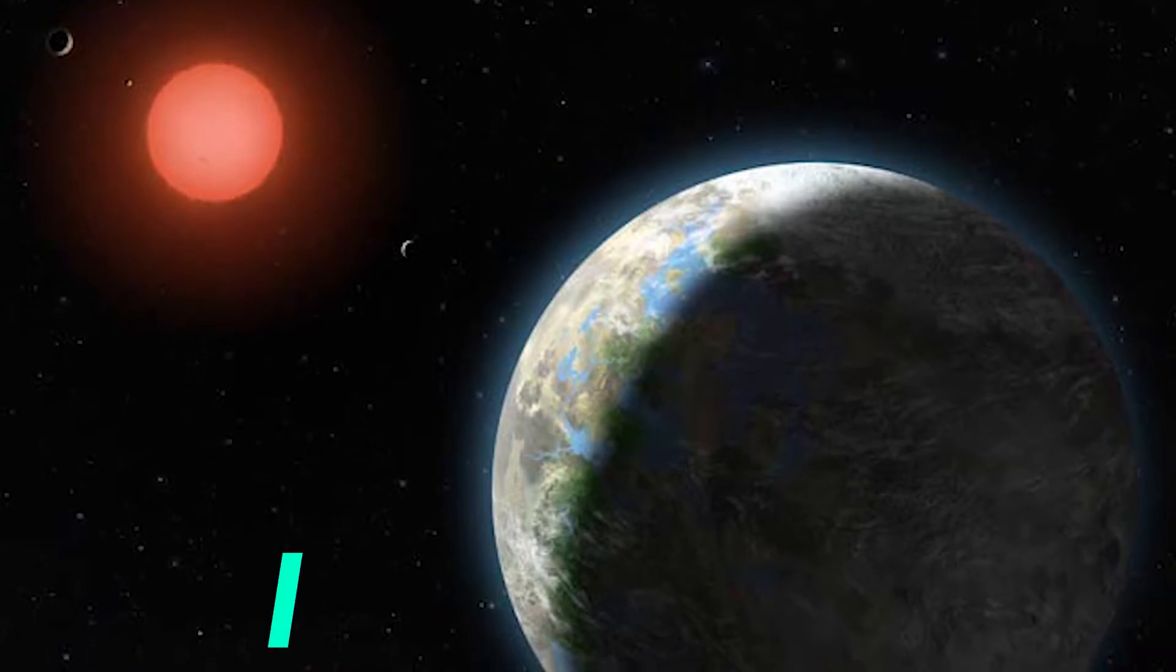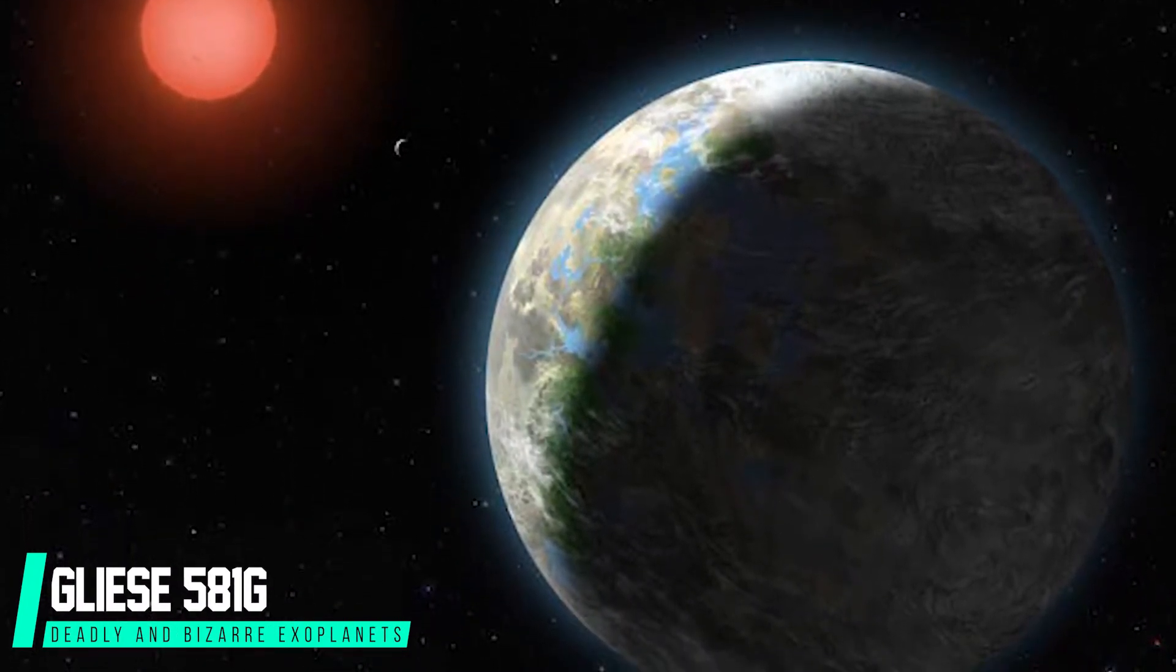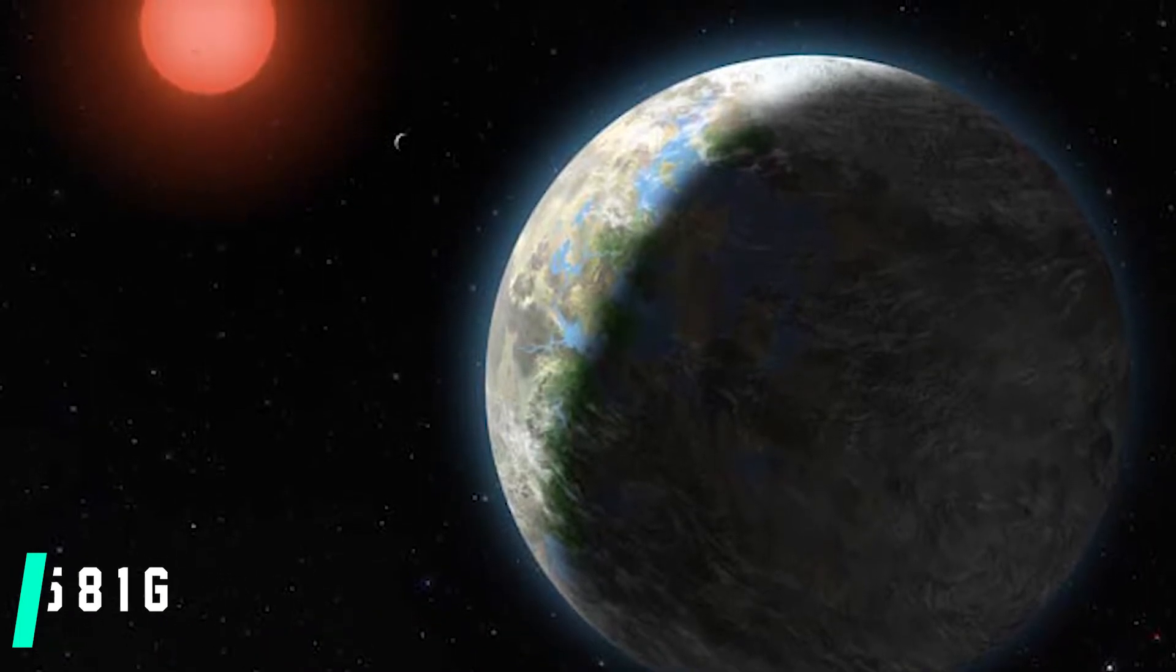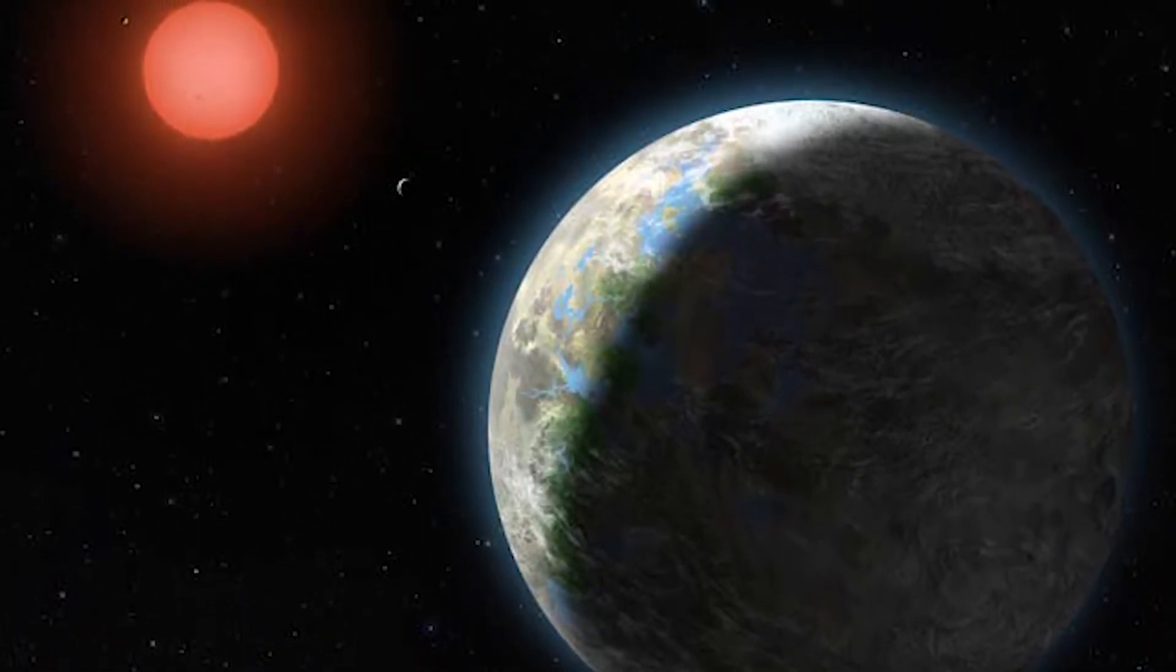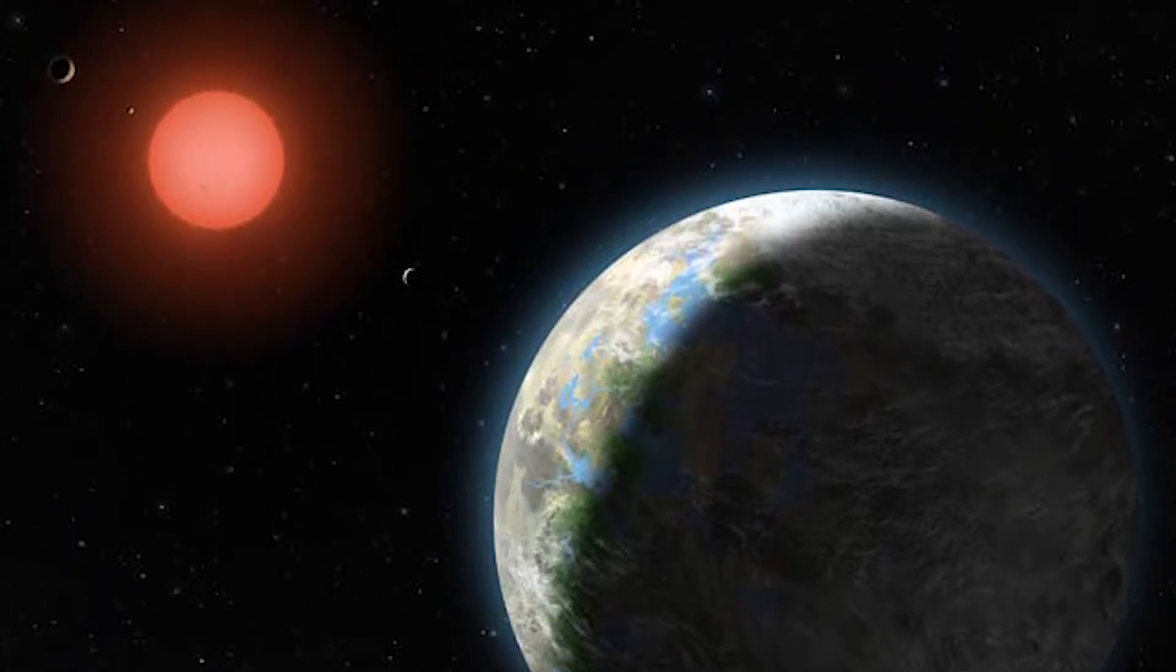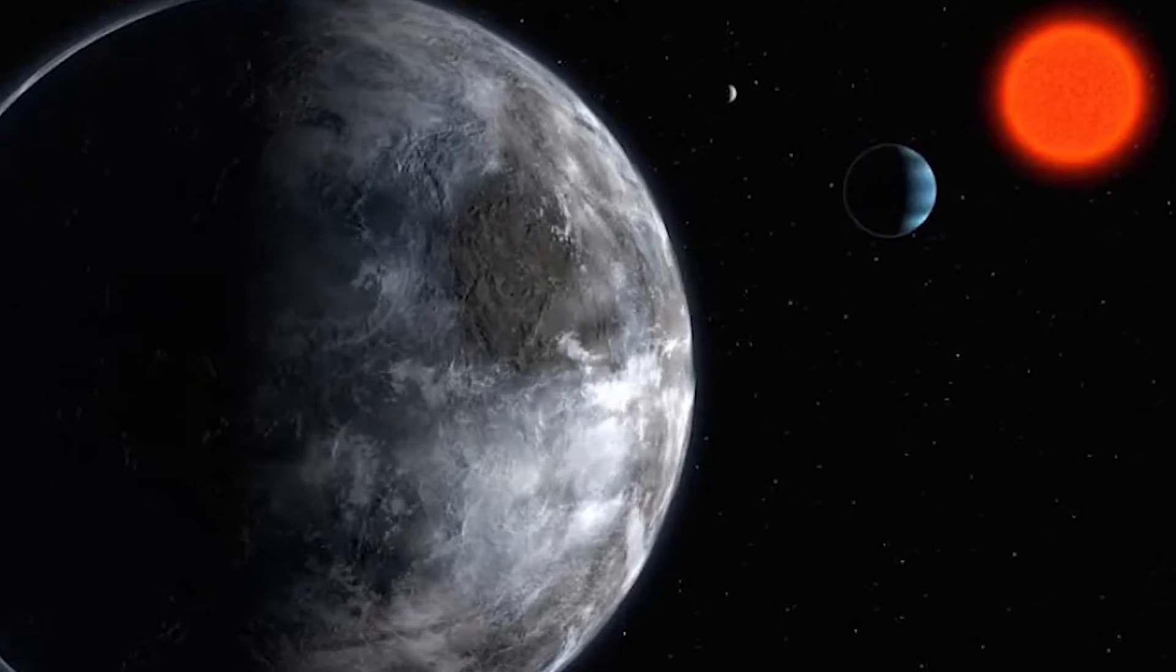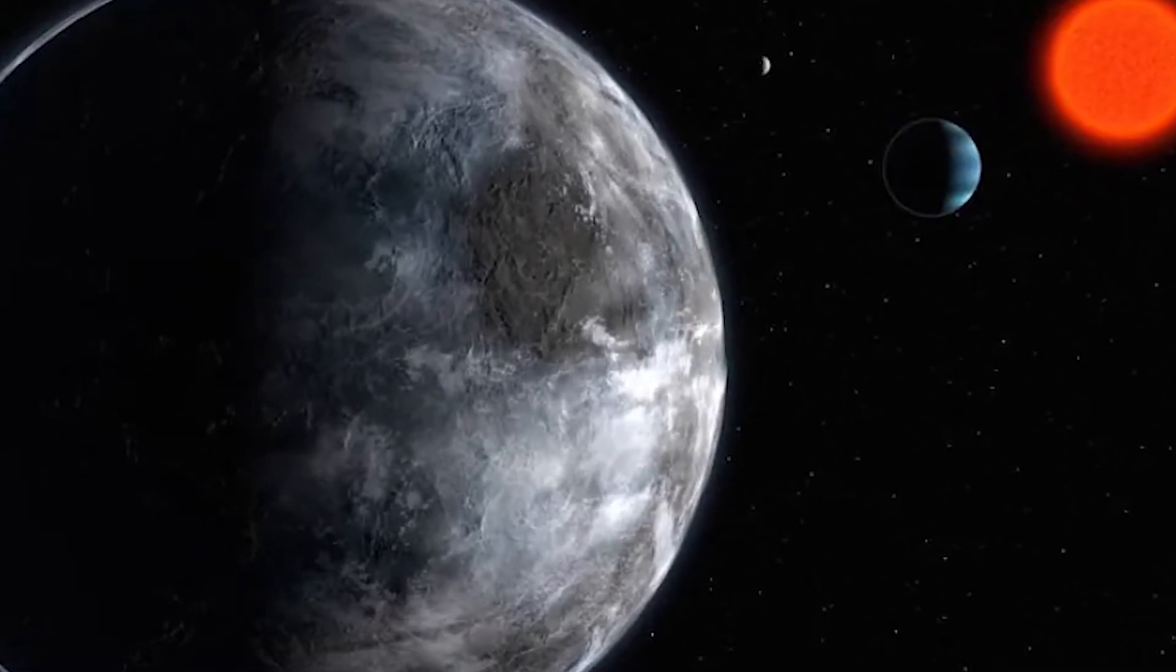Number two. Gliese 581g is one of the best candidates for a life-supporting planet. It is nearly Earth-sized and it orbits within its star's habitable zone, which is the area around a star where planets could have conditions necessary for supporting life as we know it. However, this planet is tidally locked, meaning the same side of the planet is always facing its star as it orbits.